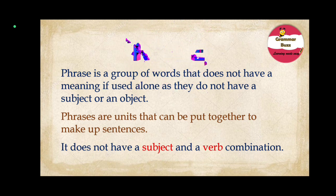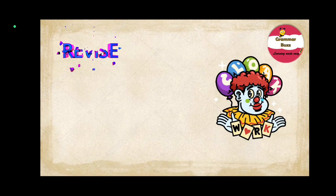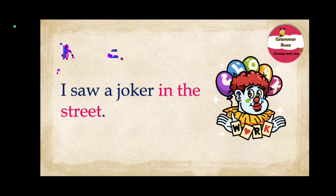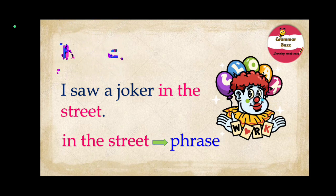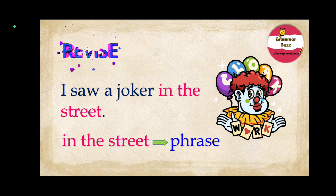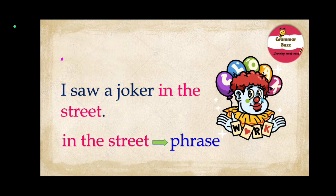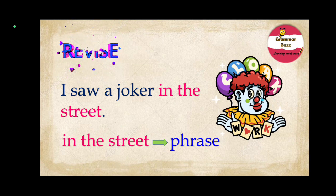A phrase lacks both the subject and the object, hence it cannot stand alone to give a complete meaning. Now let us take the example sentence: I saw a joker in the street. In this sentence, 'in the street' is a phrase. It does not have a subject-verb combination. But when the same phrase is taken together in association with other words in a sentence, it makes a complete meaning. So 'in the street' is a phrase.